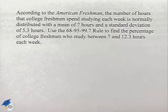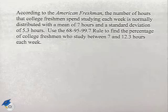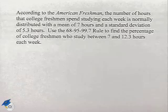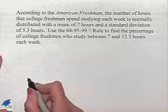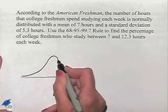Use the 68-95-99.7 rule to find the percentage of college freshmen who study between 7 and 12.3 hours each week. We're going to sketch out a normal distribution so that we can see what we're dealing with.